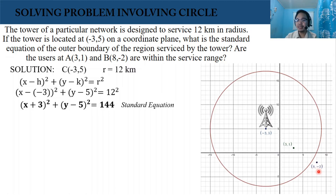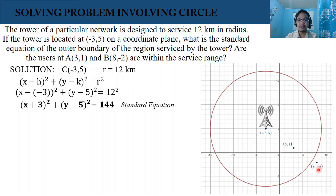As we can see, point A (3, 1) is within the service range of the tower while point B is outside. Now, what if we don't have the graph? What is the other way that we can use to determine if point A and point B are within the service range?